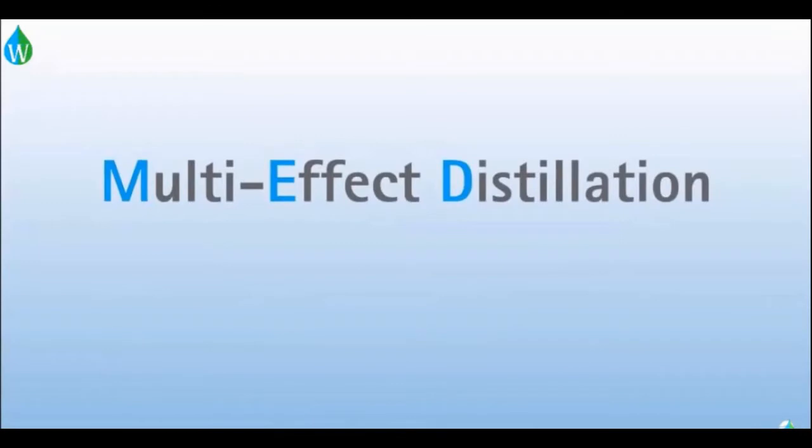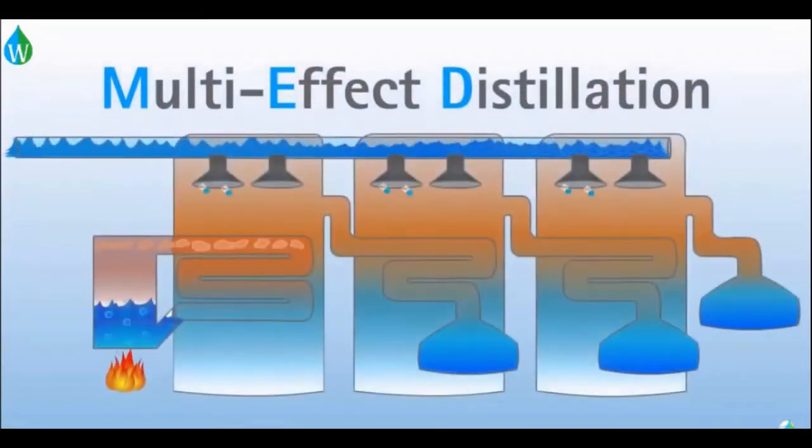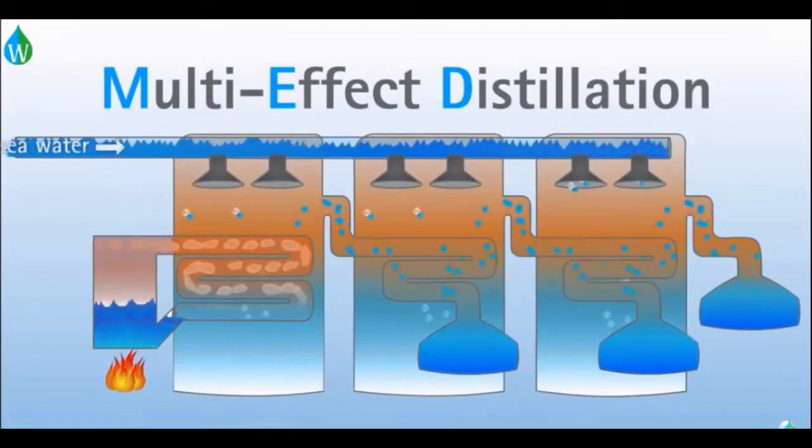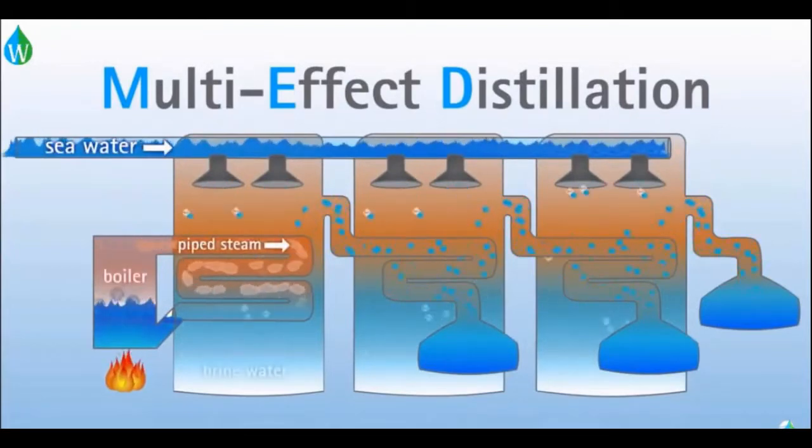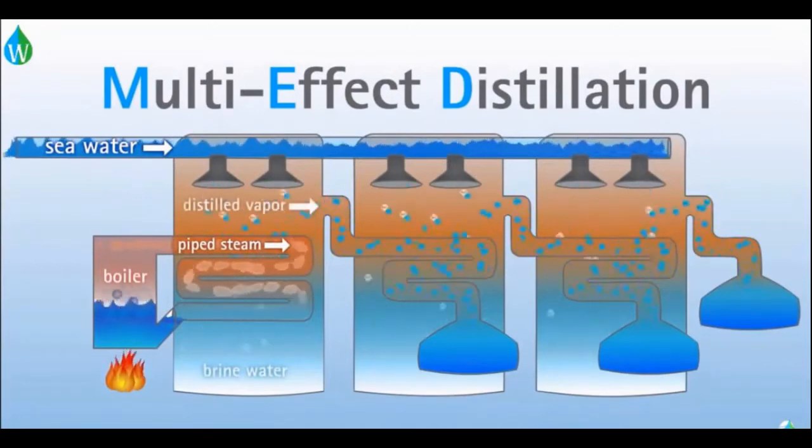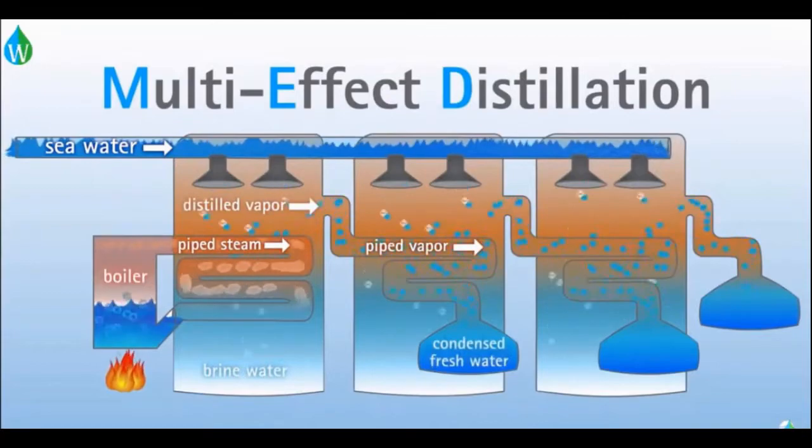Multi-effect distillation sprays seawater into a chamber with pipes that are heated by steam. As the seawater hits the pipes, it evaporates and separates from the salts. The hot fresh water vapor is collected and used to heat steam pipes in a subsequent chamber where the same process is repeated. Then the steam is condensed and removed from the system as fresh water.